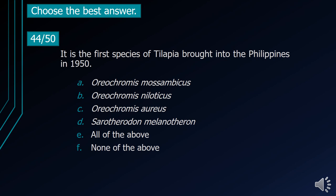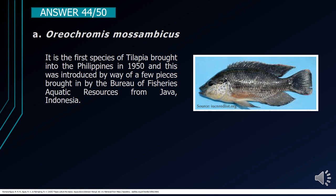Number 44. It is the first species of tilapia brought into the Philippines in 1950. A. Oreochromis mossambicus. B. Oreochromis niloticus. C. Oreochromis aureus. D. Sarotherodon melanotheron. E. All of the above. F. None of the above. The correct answer is letter A, Oreochromis mossambicus. It is the first species of tilapia brought into the Philippines in 1950, introduced by the Bureau of Fisheries and Aquatic Resources from Java, Indonesia.